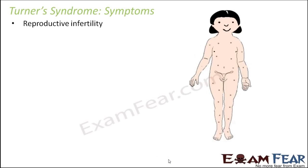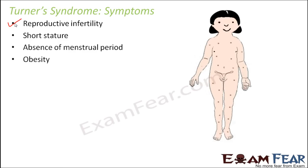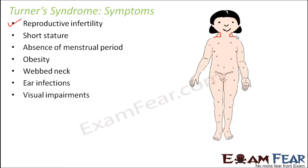Some symptoms of Turner syndrome: reproductive infertility, because when sex chromosomes are affected, menstrual periods do not come, ovulation does not take place, and the female becomes infertile. Short stature — height doesn't grow much. Absence of menstrual periods. Obesity — they tend to gain a lot of weight. Webbed neck — the neck is attached to the shoulder rather than being slender. Infections are very common, and visual impairments are also common. The chances of hearing or visual parts being affected are higher than in others. Very small fingernails are also observed.